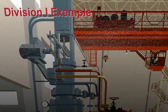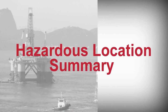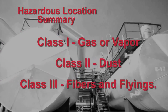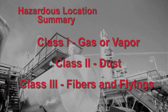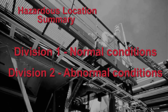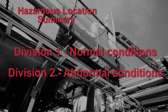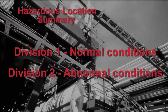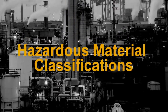So far we've covered the three types of hazardous locations: Class 1 (Gas or Vapors), Class 2 (Dust), and Class 3 (Fibers and Flyings), and secondly, two types of conditions — Division 1 normal conditions and Division 2 abnormal conditions. Now let's move on to discuss the nature of hazardous substances.